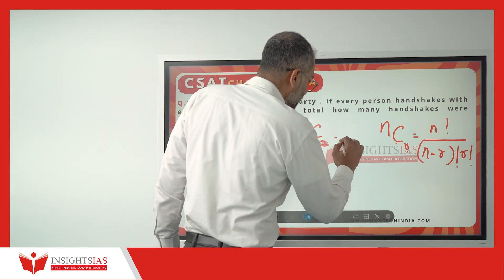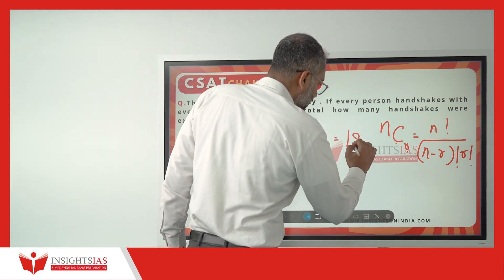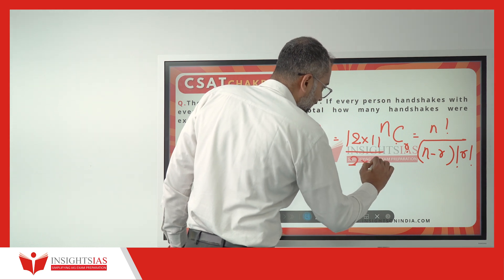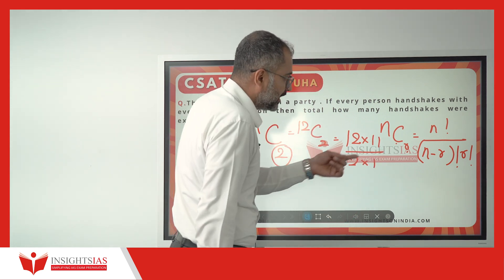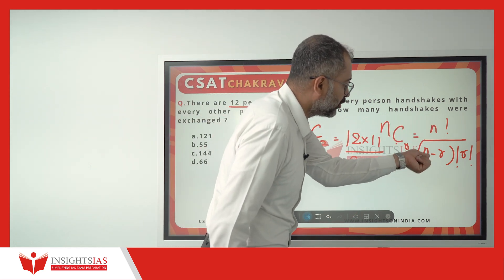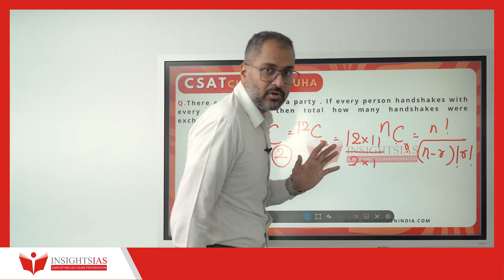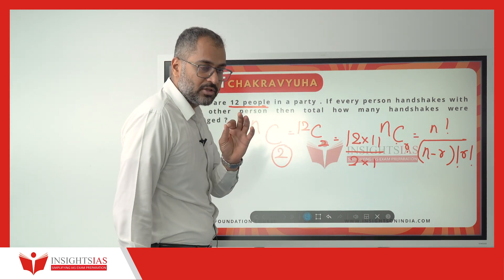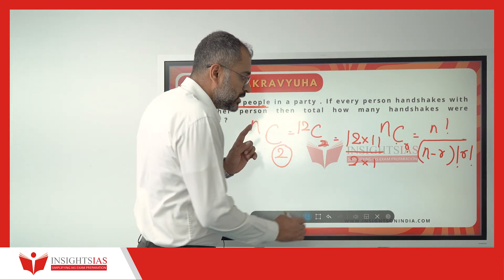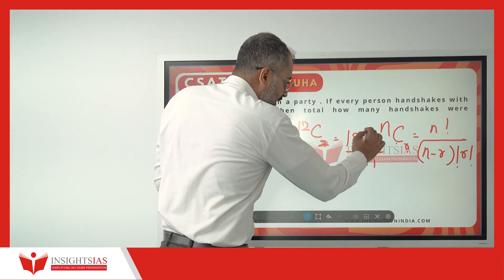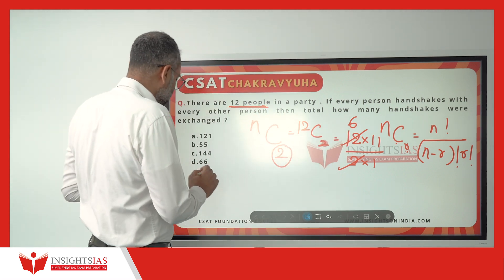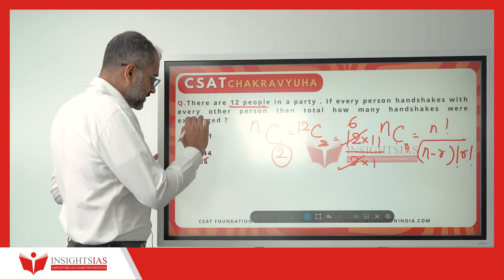12C2 equals 12 into 11 divided by 2 — in short form — which is nothing but 12 factorial divided by (12 minus 2) factorial into 2 factorial. Working this out, we get 6, so 11 into 6, which is nothing but 66.